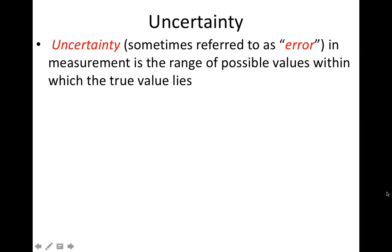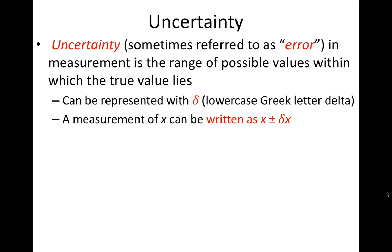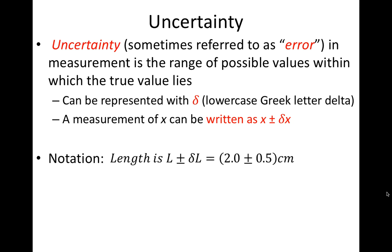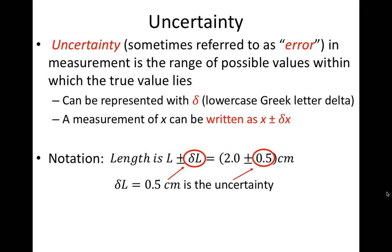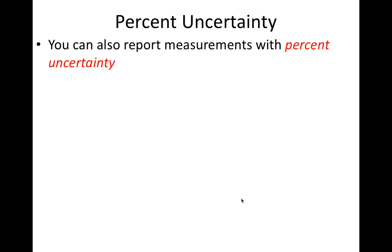As a brief discussion of notation: we can represent the uncertainty of a measurement with the lowercase Greek letter delta. So for a measurement, we write it as a best estimate x plus or minus the uncertainty in the measurement delta x. In the context of our paper clip length measurement, we write the length as L plus or minus delta L, where delta L is the uncertainty in the measurement of the paper clip's length. The best way to quantify the precision of a measurement is by considering its percent uncertainty.